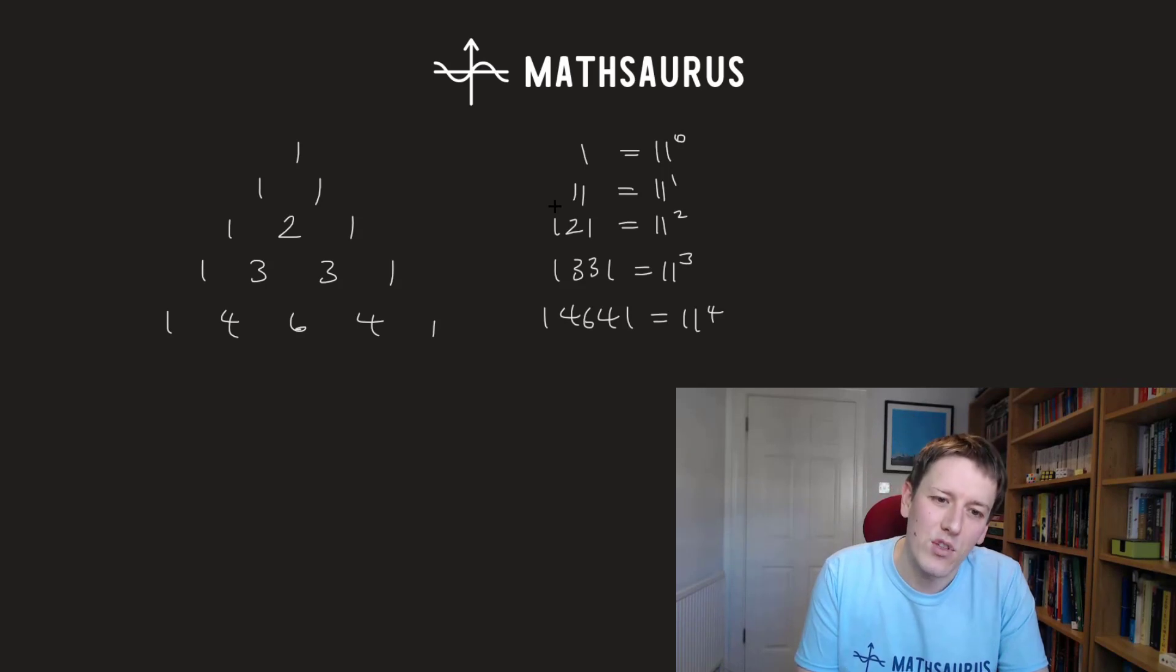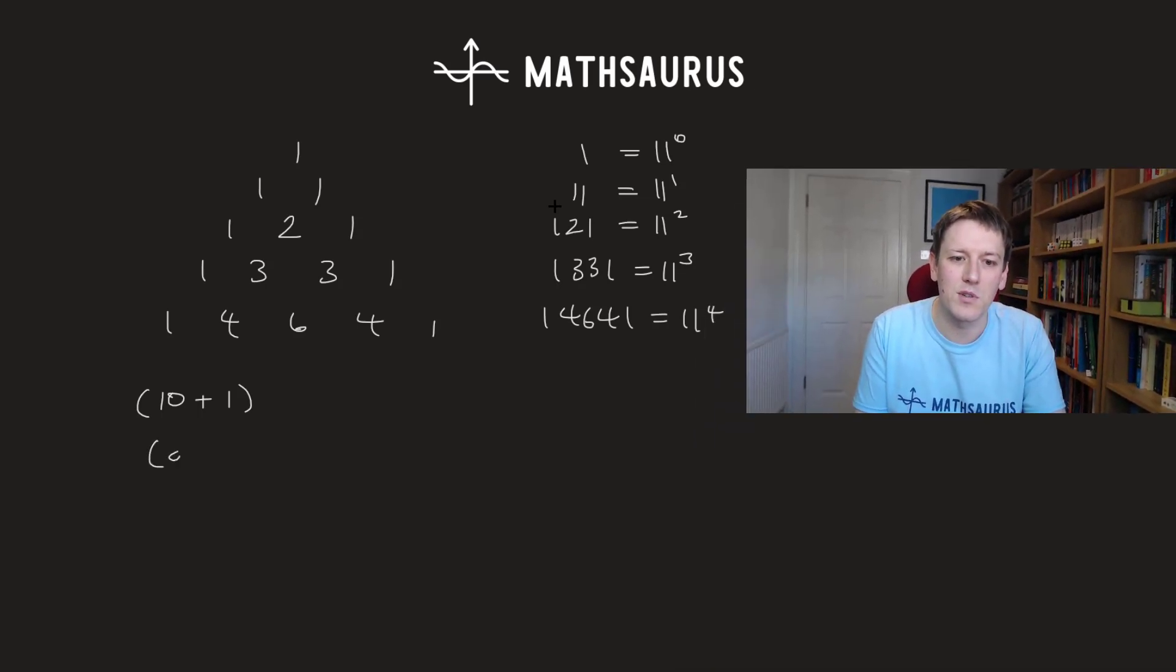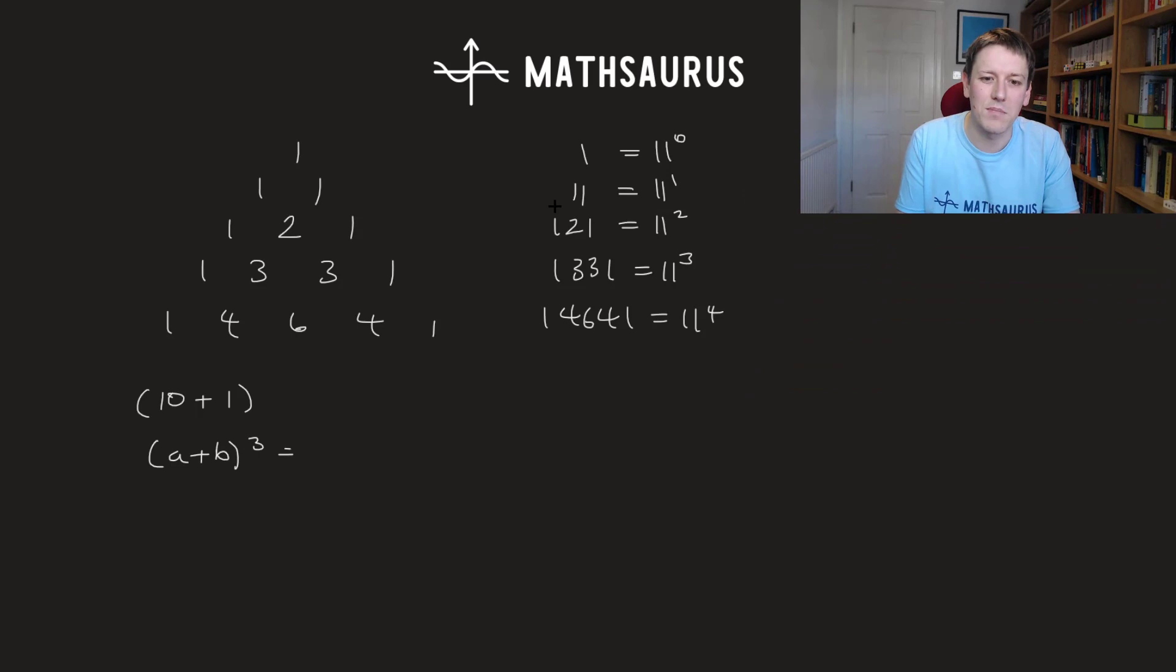So why do we get this feature? It's actually fairly easy to explain. If you think about expanding 10 plus 1 to the power of n as if it was a binomial expansion. So imagine we were doing like a plus b cubed, we know we get a cubed plus 3a squared b plus 3ab squared plus b cubed. Check out my other video on binomial expansions if you need to get to this point.